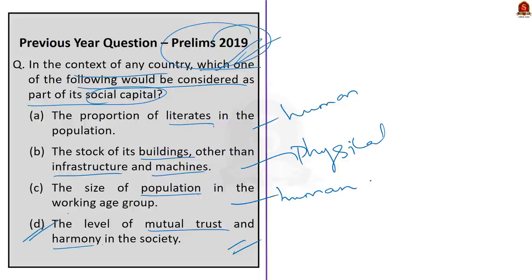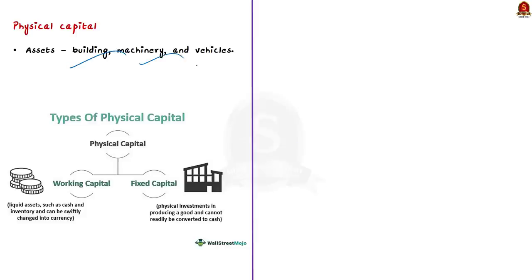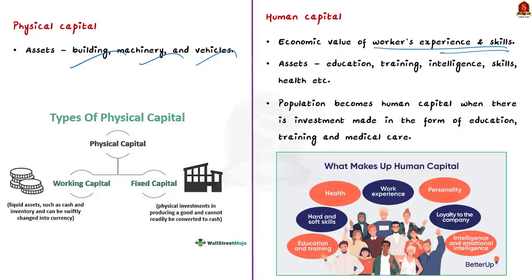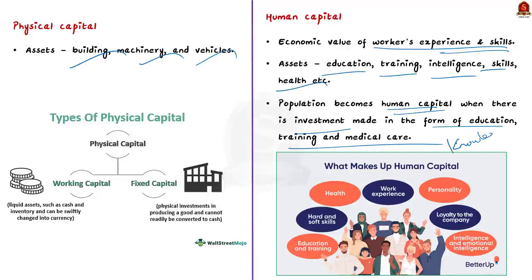Now we will see the explanation. Physical capital refers to assets such as buildings, machinery and vehicles which are owned and employed by an organization. The term human capital refers to the economic value of a worker's experience and skills. Human capital includes assets like education, training, intelligence, skills, health, etc. Population becomes human capital when there is investment made in the form of education, training and medical care. Investment in education is considered as one of the main sources of human capital, and health is also an important input.